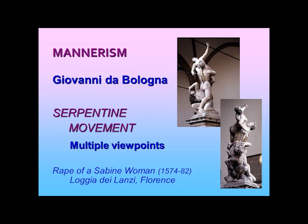Here you see the statue. There is some question about whether he knew he was going to do the Rape of a Sabine Woman, or if he just was doing his figures and then said this will fit the Rape of the Sabine Women. But at any rate, this is the story from classical antiquity about how the Romans, founding their new city in Sabine territory, got their brides. They staged a big party, invited the locals who had refused to let them marry their daughters, grabbed the women and made off with them. These became the wives of the Romans, because you cannot found a great city that will last for thousands of years unless you have wives. If it's just males, the line will die out.